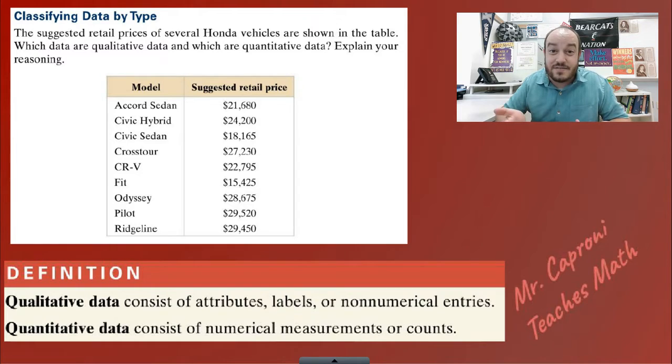A qualitative variable is really any type of label you can place on something. It's pretty much anything that's not quantitative. If we look at the example in this slide, you can see it's looking at a group of vehicles and it separates it by the model of the vehicle and the suggested retail price.